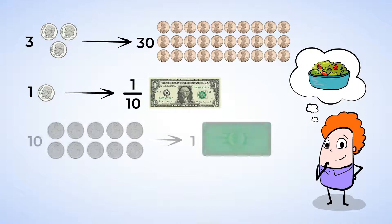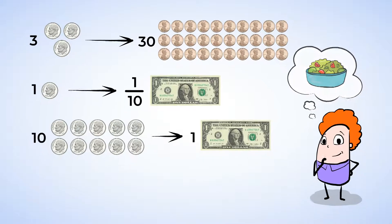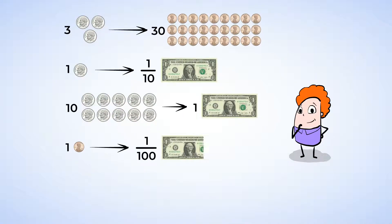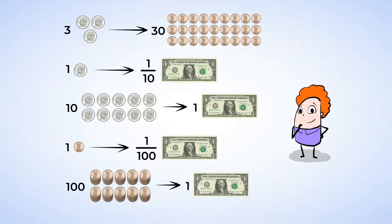Dimes are a tenth of a dollar, since there are 10 dimes in a dollar, while pennies are one hundredth of a dollar, because there are 100 pennies in a dollar. By changing dimes into pennies, you convert tenths into hundredths. What do you say we dive in and take a deeper look?